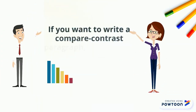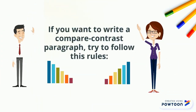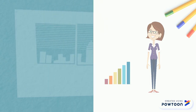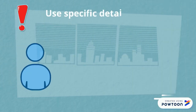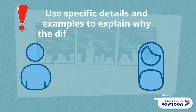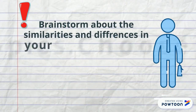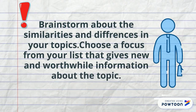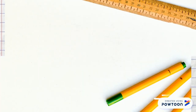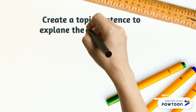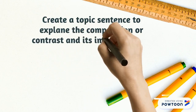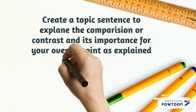If you want to write a Compare-Contrast Paragraph, try to follow these rules. Use specific details and examples to explain why the difference or similarities matter. Focus your ideas — brainstorm about the similarities and differences in your topics. Choose a focus from your list that gives new and worthwhile information about the topics. Create a topic sentence to explain the comparison and contrast and its importance for your overall point as explained in your thesis.